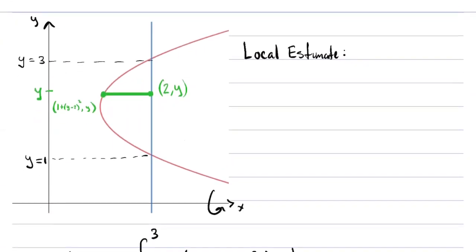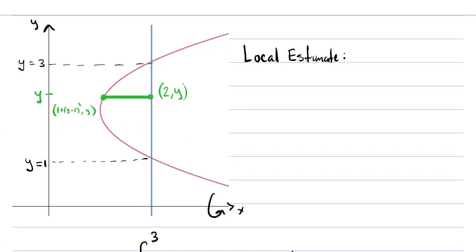How are we going to modify our shell method? Here's the picture blown up a bit. y equals 1 and y equals 3 are the extremes. This is the line x equals 2; this is the parabola x equals 1 plus (y minus 2) squared. If I pick a y value between 1 and 3, this point is at (2, y) because x is 2 on that line. This other point is at (1 plus (y minus 2) squared, y) because it's on that parabola.